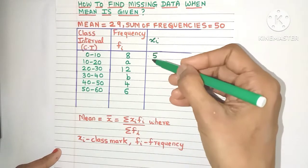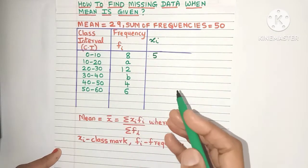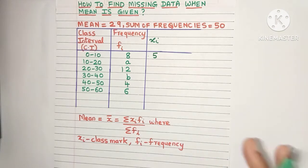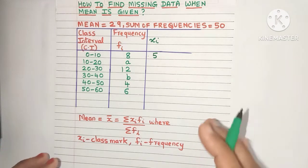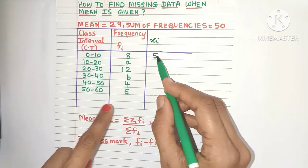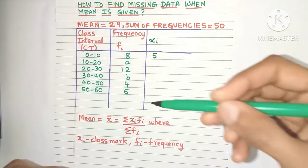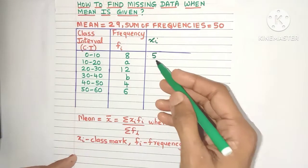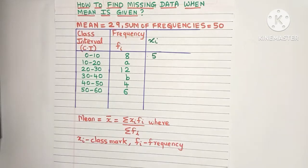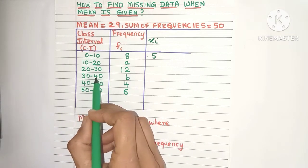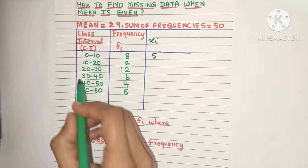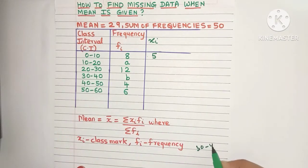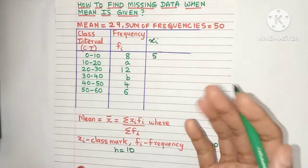Just repeat the process and you'll get the class marks for all intervals, but there's an even easier way. Once you find the first class mark, just add the class size to it and you'll automatically get the next class mark. What is the class size? Just subtract the lower limit from the upper limit. For example, 40 minus 30 equals 10. The class size is 10.